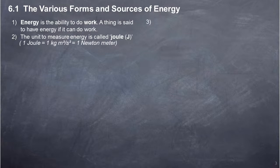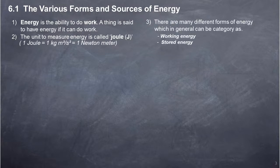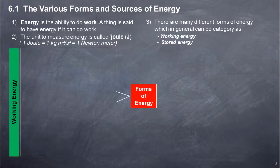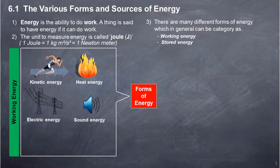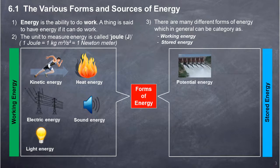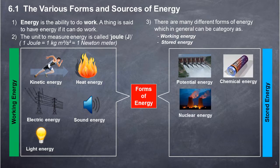There are many different forms of energy, which in general can be categorised as Working Energy and Stored Energy. Working Energy includes: Kinetic Energy, Heat Energy, Electric Energy, Sound Energy, and Light Energy. Stored Energy includes: Potential Energy, Chemical Energy, and Nuclear Energy.